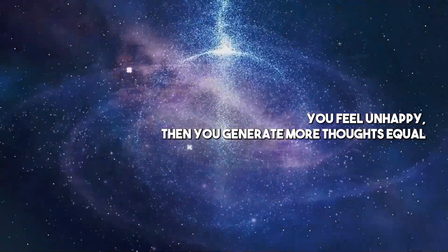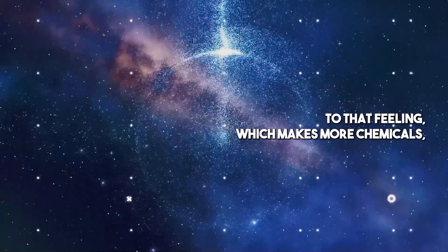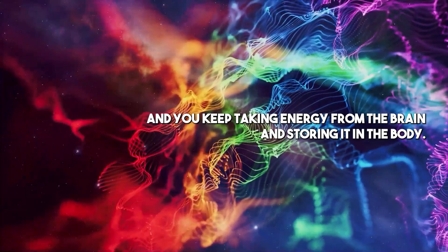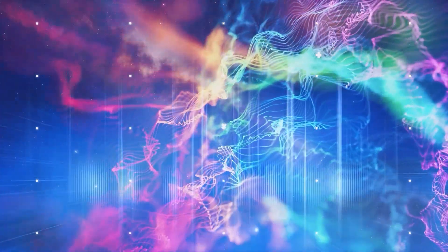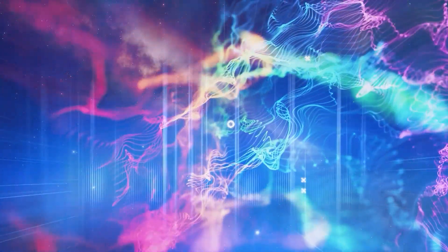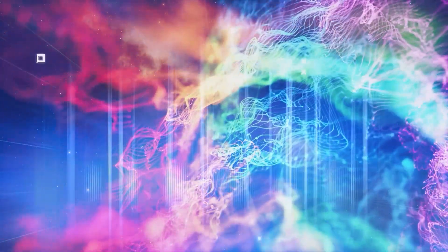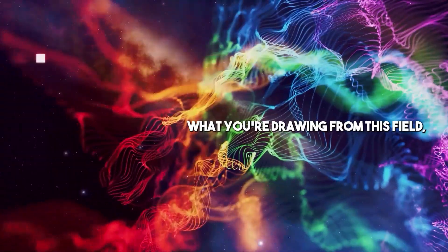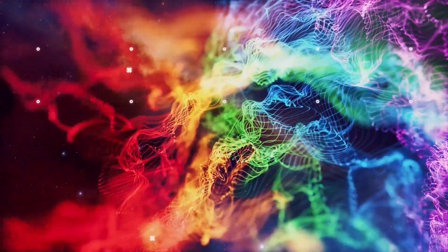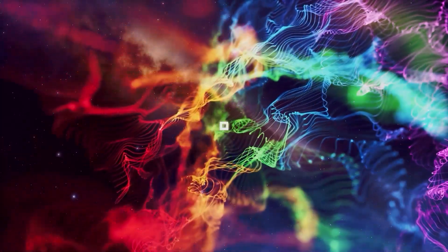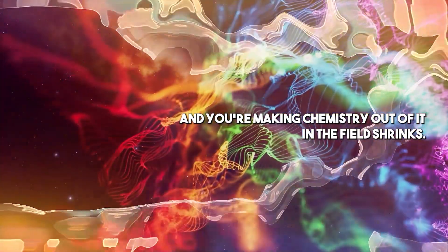Feel unhappy, then you generate more thoughts equal to that feeling, which makes more chemicals. You keep taking energy from the brain and storing it in the body. If you react to people in your life and you feel anger, frustration, whether it's traffic, the news, parents, girlfriend, you're drawing from this electromagnetic field. You're making chemistry out of it and the field shrinks.